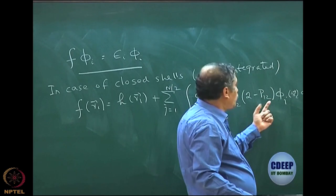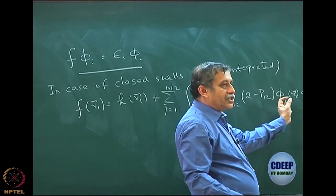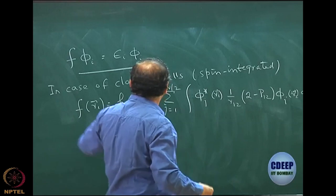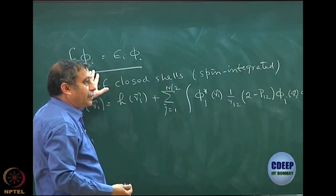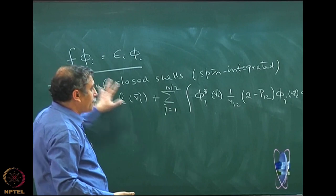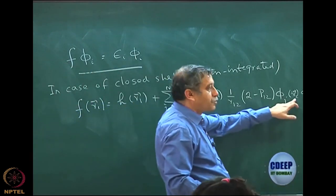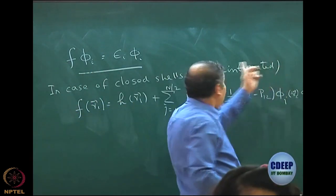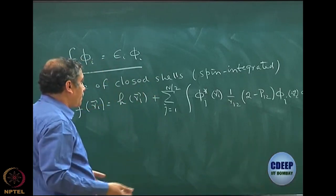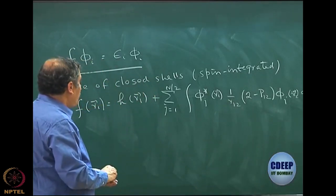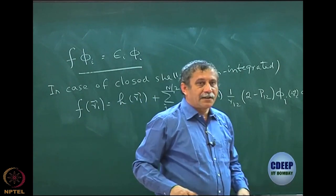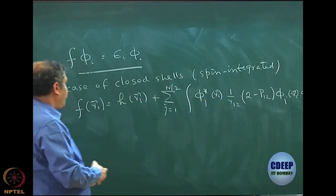The operator P₁₂ ensures the interchange of r₁ and r₂ when it acts on the coordinate of electron 1, bringing in the exchange effect which cannot be classically interpreted. Otherwise everything is exactly the same as the Hartree-Fock equation for spin orbitals.